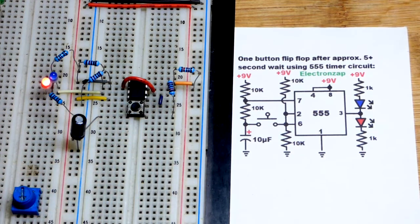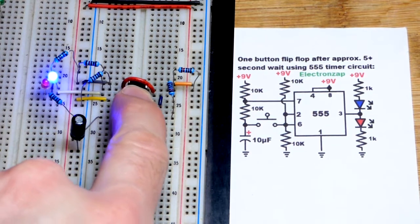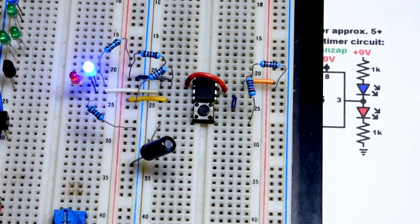So there you can see I pressed the button there, the output went from low to high, and it's going to stay high until I press the button again and set the output low.